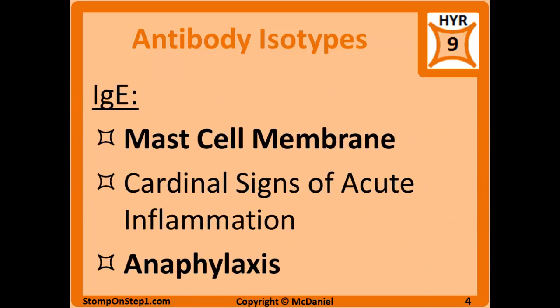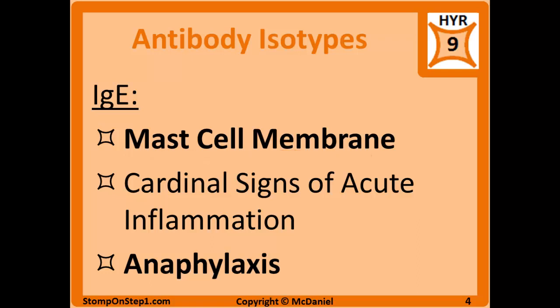IgE is bound to the membrane of mast cells. It plays a role in acute inflammation and, more importantly for Step 1, it plays a role in type 1 hypersensitivity and anaphylaxis or allergic reactions. These reactions are triggered when multiple membrane-bound IgE molecules bind allergens and aggregate or cross-link, causing the release of histamine from the mast cells.